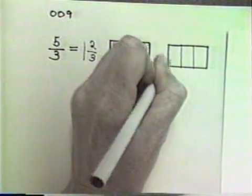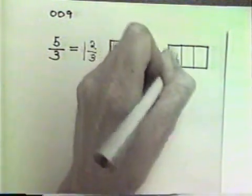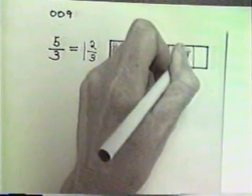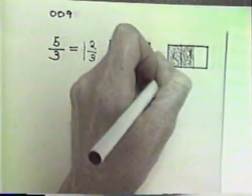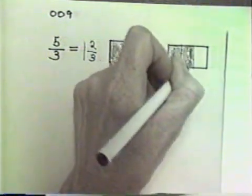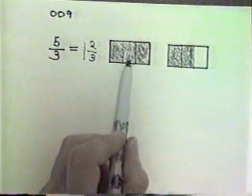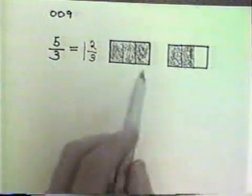And I need another whole. I've already split it up into three pieces, and I want two of these three pieces. So let's shade in two of these three pieces. That represents one whole and two-thirds of another whole, or you can also say it's five-thirds: one, two, three, four, five. And then each whole is split into three pieces, so it's five-thirds.